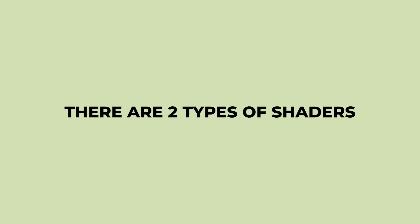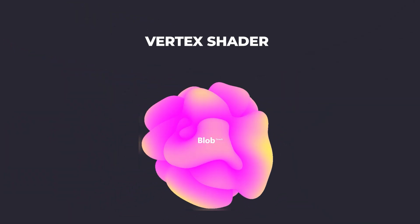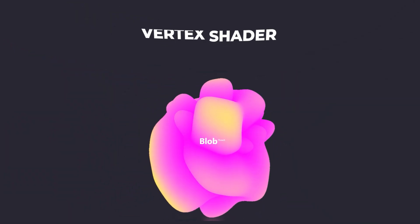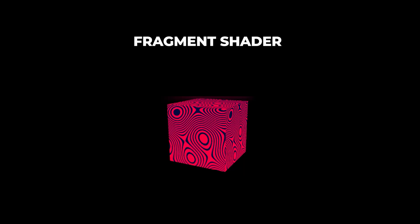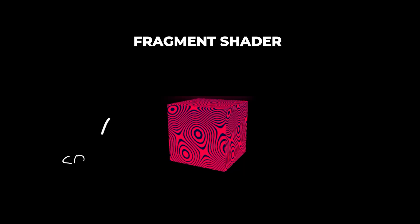Shaders for the web consist of two types: vertex shaders and fragment shaders. In short, vertex shaders allow you to manipulate the physical position of a shape, while fragment shaders allow you to modify colors.